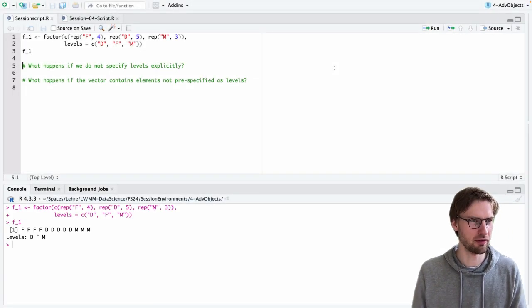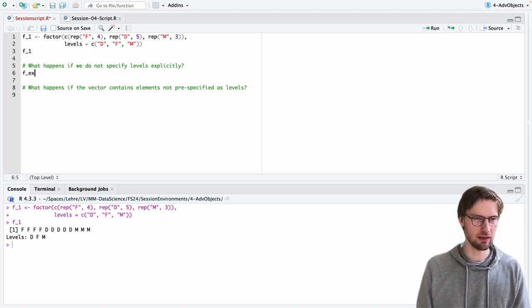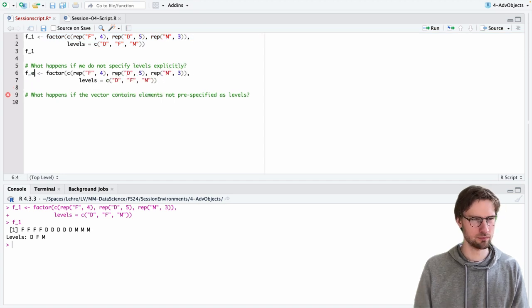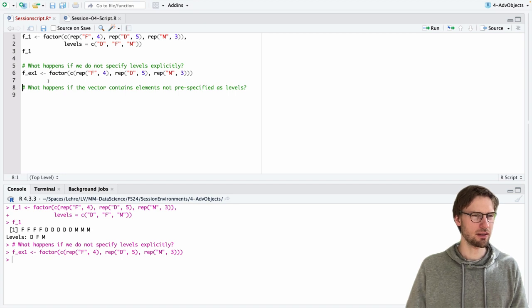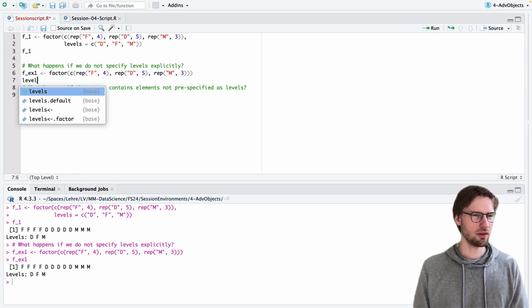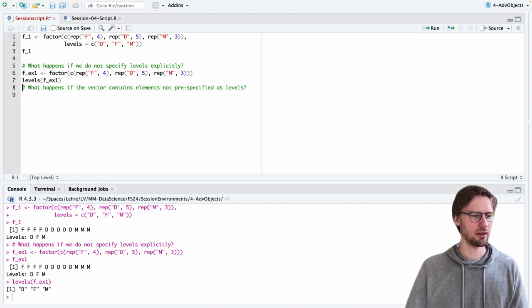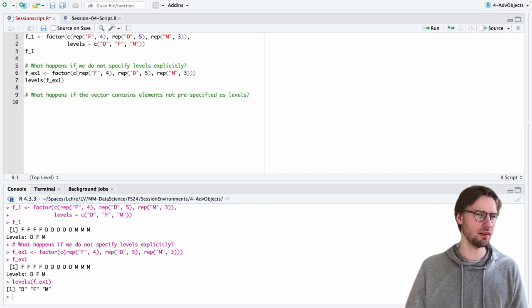So here is the factor that we just defined. First question was, what happens if we do not specify the levels explicitly? So we can do so by defining a new factor that is basically the same as the one above, but skips the optional argument levels. If we look at this factor printed here, we see that the levels are set automatically. They are set in a way that every element that occurs in the underlying vector is also part of the levels of this factor. We can use the function levels to return the levels of a factor as character string, and we see again that the levels are automatically set to all the elements that occur at least once in the underlying factor.